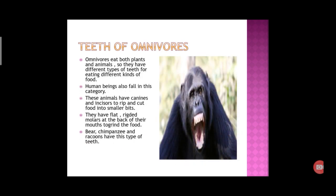Teeth of Omnivores. The animals that eat both plants and animals are called omnivores. A very important thing is that humans also fall in this category. In this case, the canines and incisors cut the food into small parts and flat molars at the back grind the food bits. For example, bear, chimpanzee and raccoons have such type of teeth.